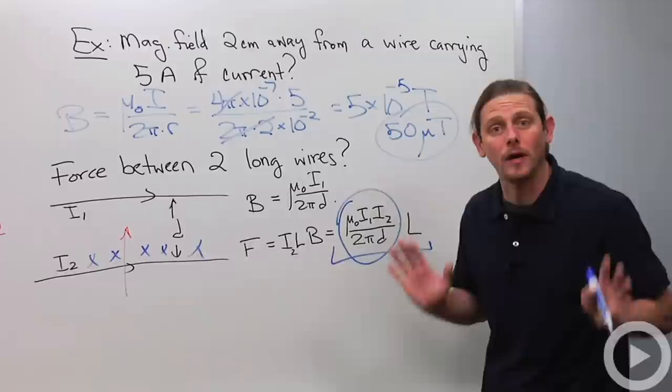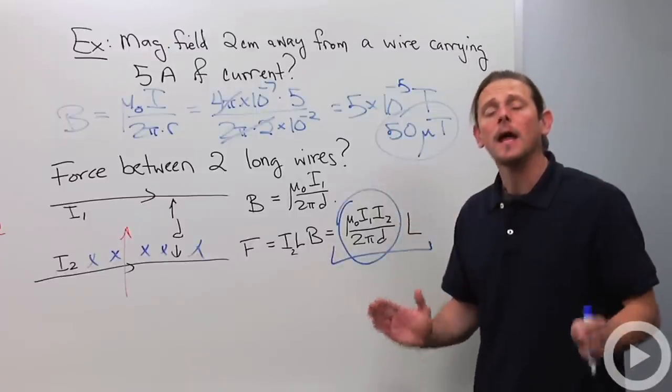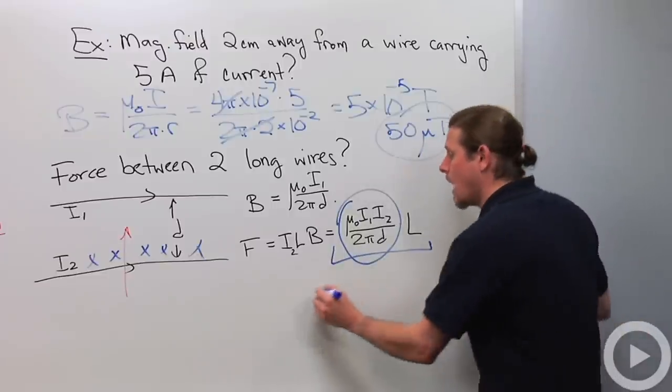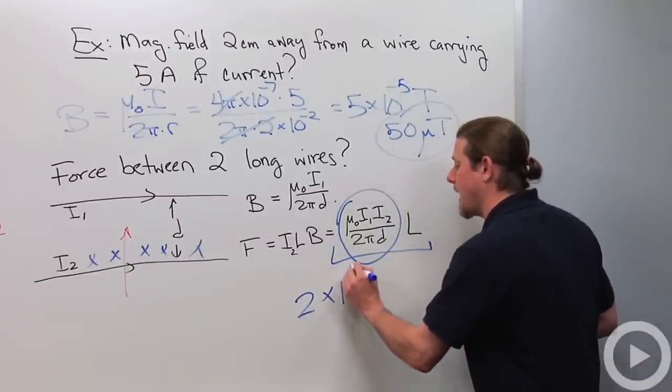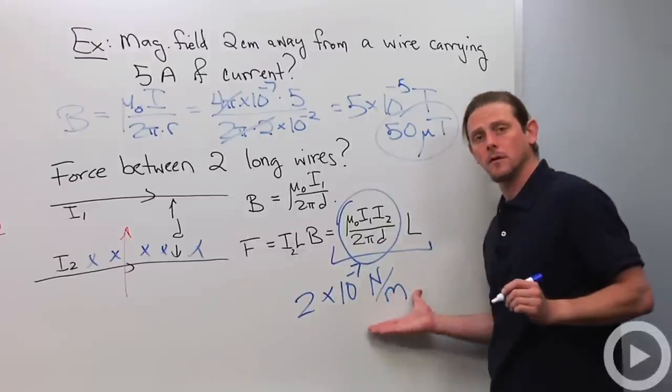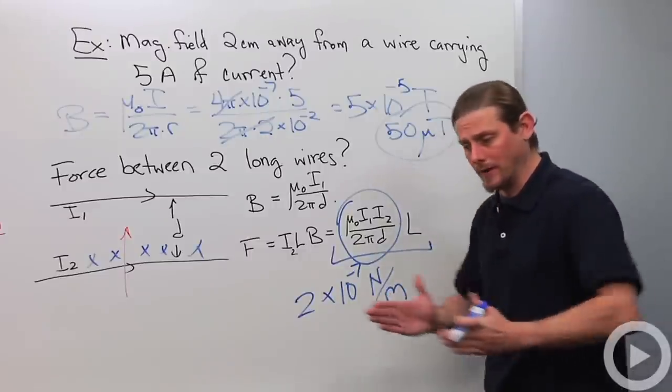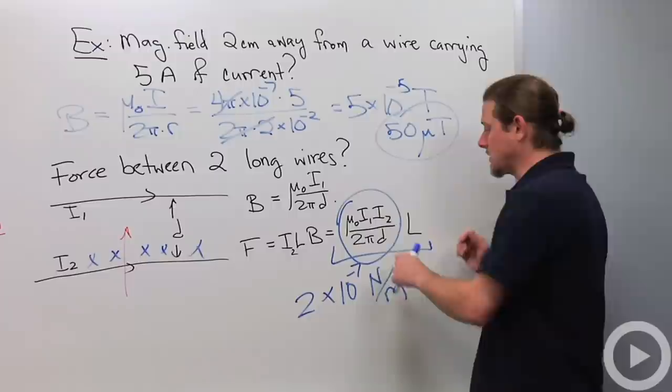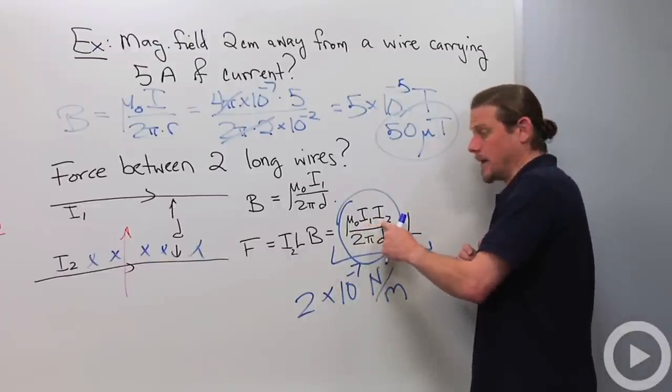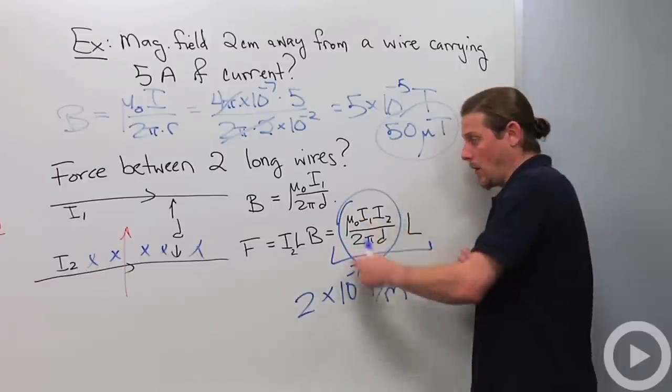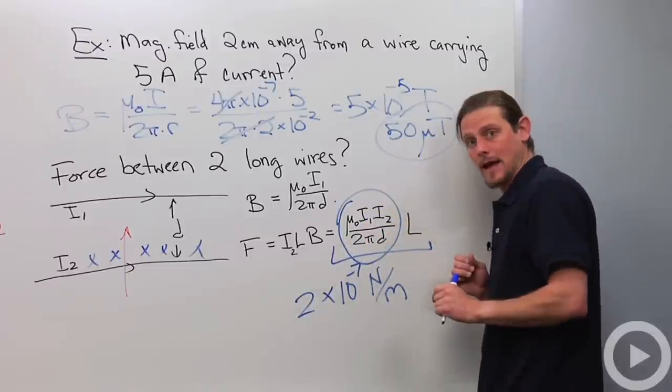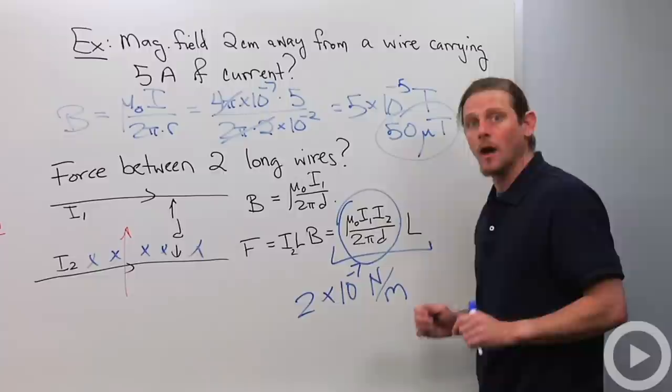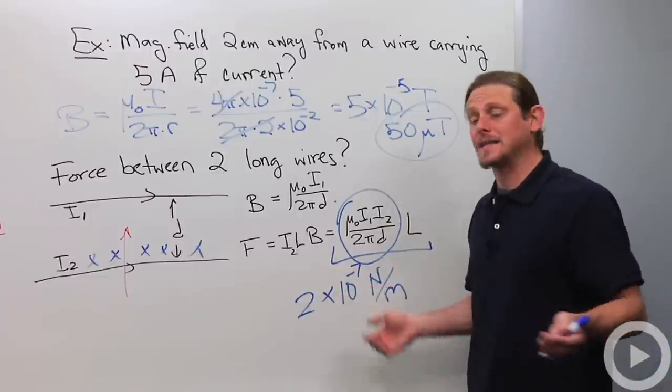Now, this is actually how the ampere is defined. The amp is the current that gives exactly a force per unit length of 2 times 10 to the minus 7 newtons per meter, when you have two wires carrying the same current, and they're 1 meter apart. So, that means that this is 1, this is 1, this is 1, and I need the whole thing to be 2 times 10 to the minus 7. So, that means μ0 is 4π times 10 to the minus 7. And that's where the definition of the ampere comes from, and that's Ampere's law.